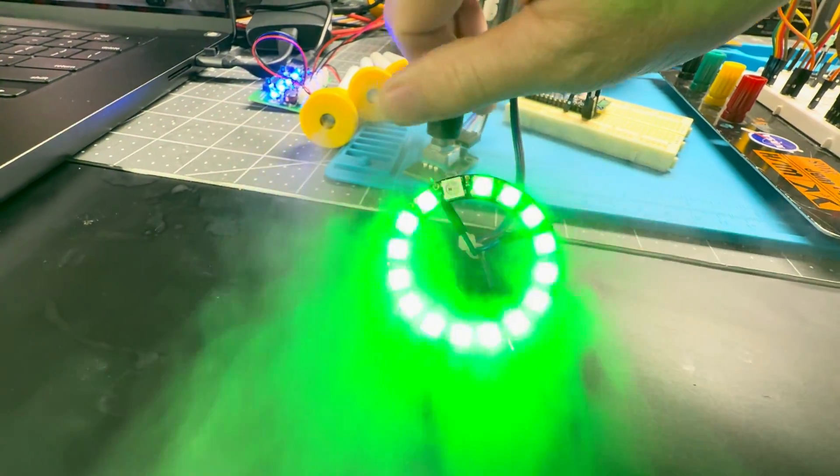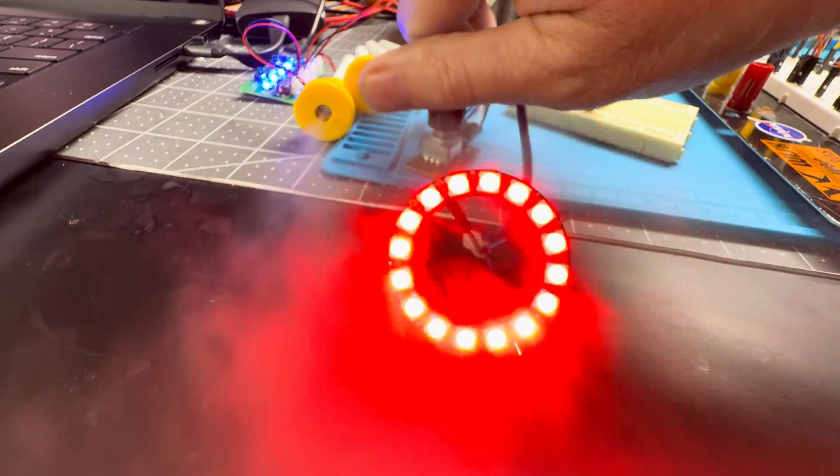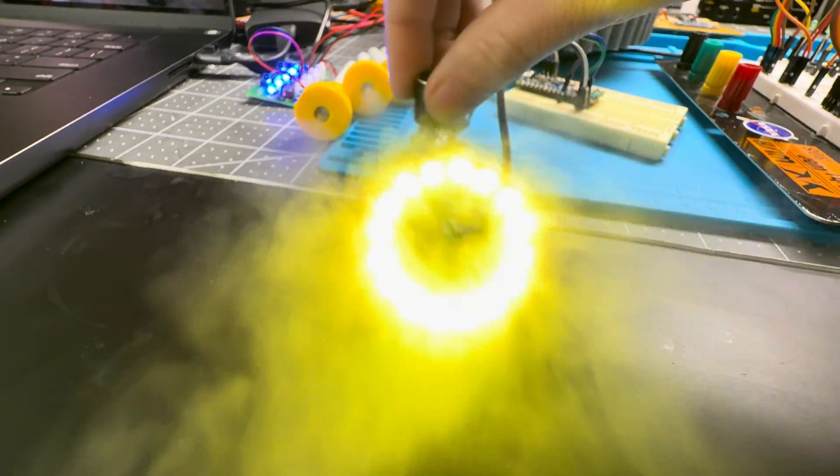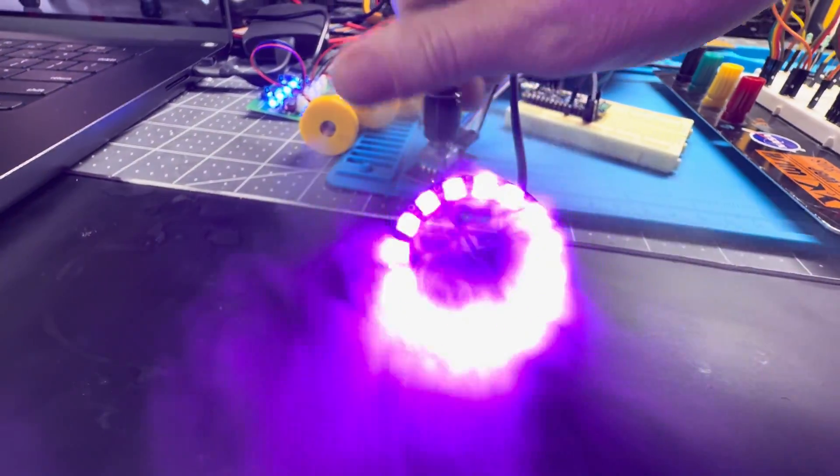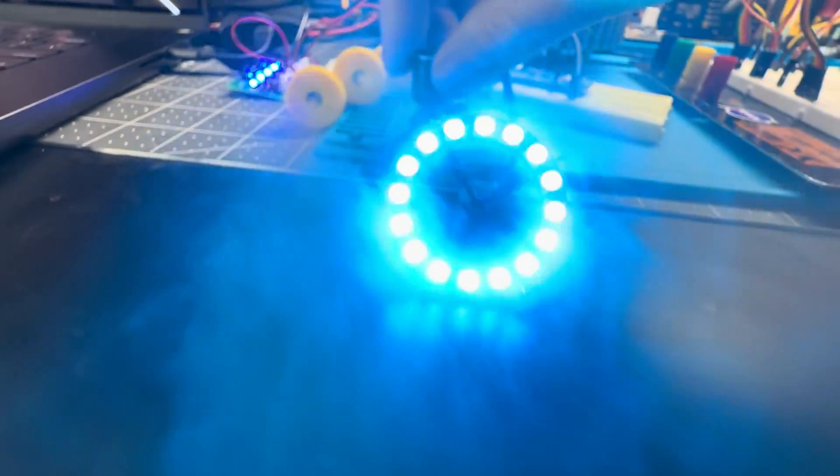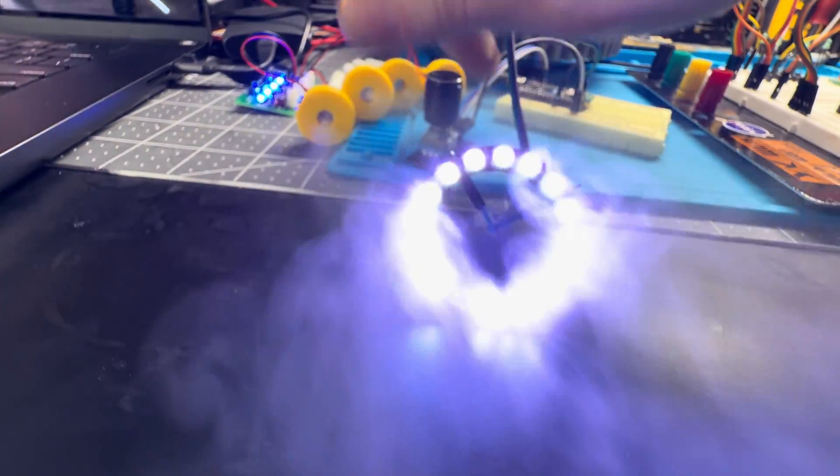When you double click the encoder, it changes the color. There's green, red, blue, red and green which makes yellow, red and blue which makes purple, green and blue for cyan, and then red, green, and blue together for white.